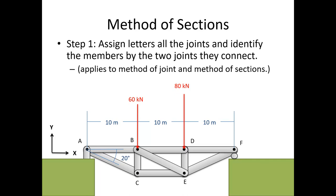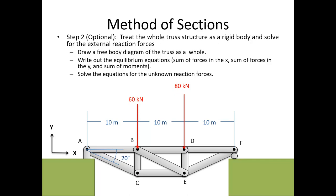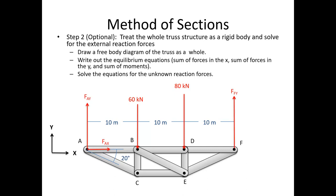Step two, which is optional, is to treat the whole truss as a rigid body and solve for the external reaction forces. Imagine picking up the entire bridge, separating it from the foundation, and solving for the forces holding it up. Draw your free body diagram of the truss as a whole, write out your equilibrium equations — sum of forces in X, sum of forces in Y, and sum of moments — and solve for the unknown reaction forces, in this case Fax, Fay, and Ffy. This step is optional but often makes later analysis easier.